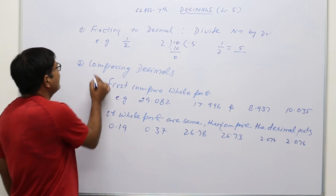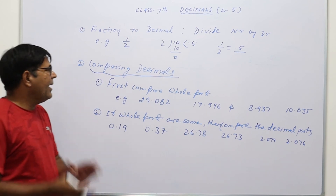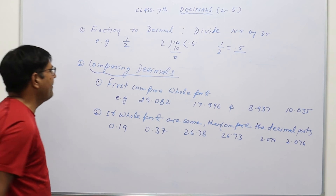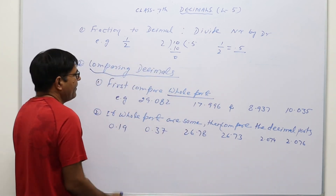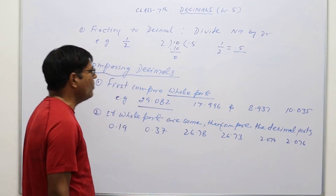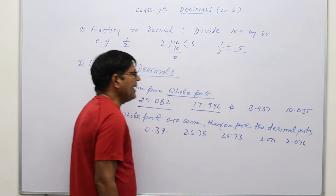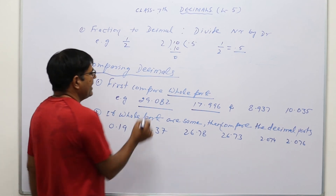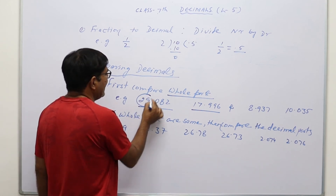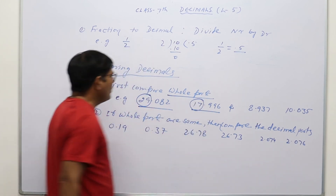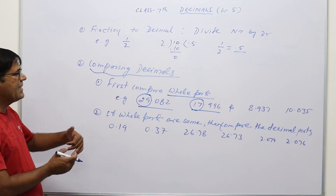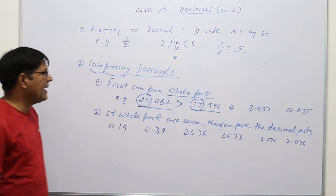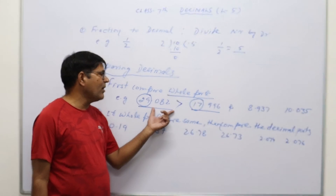Now the next point is comparing decimals. When we have two decimal numbers and we have to compare which one is smaller and which one is greater, then to compare decimal numbers, first of all we will compare the whole part. For example, one decimal number is 29.082 and another is 17.996. The whole part of the first is 29 and the second is 17. If the whole part of one decimal number is greater than the other, then that decimal number is greater. So 29.082 is greater than 17.996.